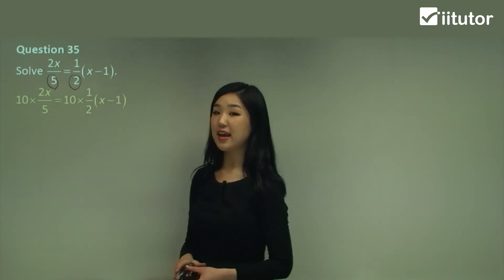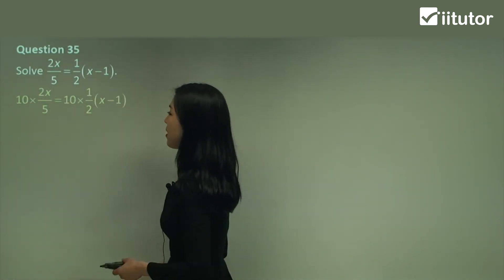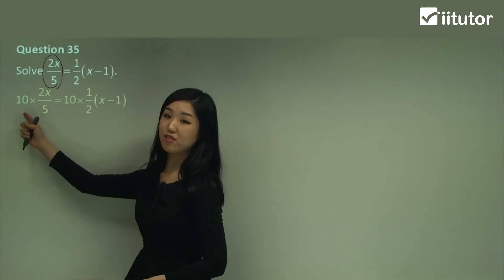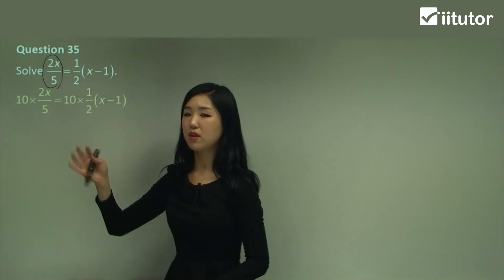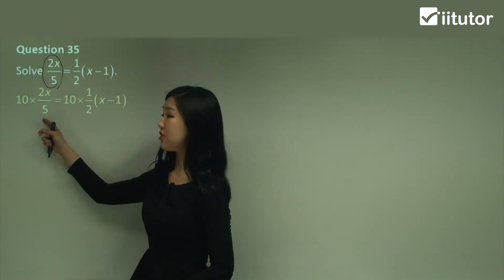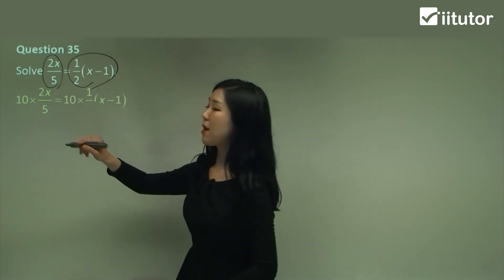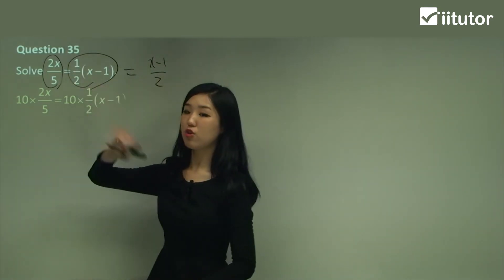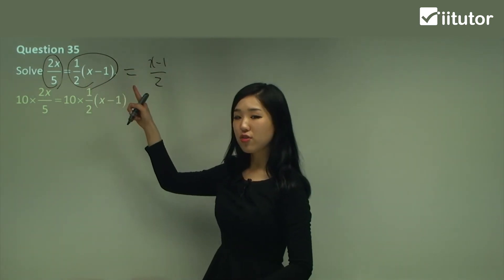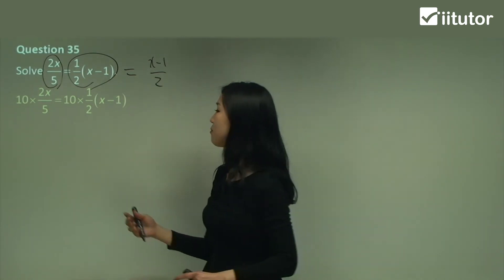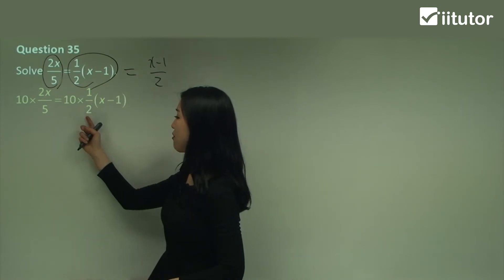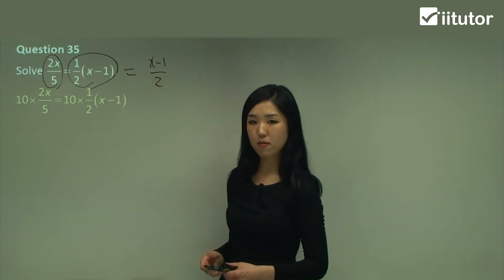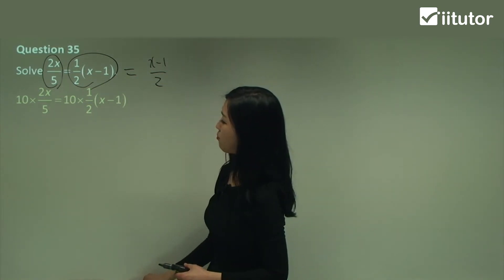Now, one thing that a lot of students make mistakes with — one fraction is one term. So you just need to multiply by 10 to the whole thing. You don't have to multiply 10 to the top and the bottom separately. Just multiply 10 once to the whole fraction. Same with this side — notice that half times (x − 1) is the same thing as (x − 1) over 2. So this is also one fraction, and you just need to multiply 10 once. You don't have to multiply 10 to the half and 10 to (x − 1) again. That's the area where a lot of students make mistakes, so be very cautious.